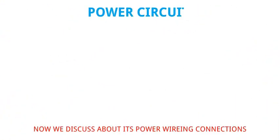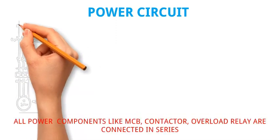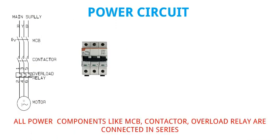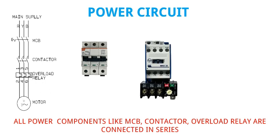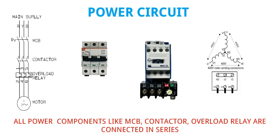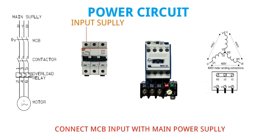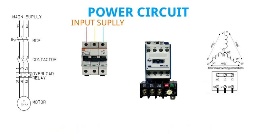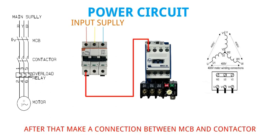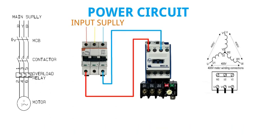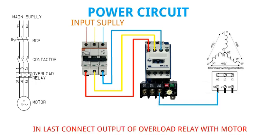Now we discuss about the power wiring connections. All power components — MCB, contactor, and overload relay — are connected in series according to the drawing. Connect the MCB input with the main power supply. After that, make a connection between MCB and contactor.